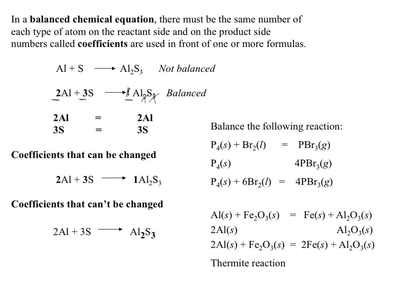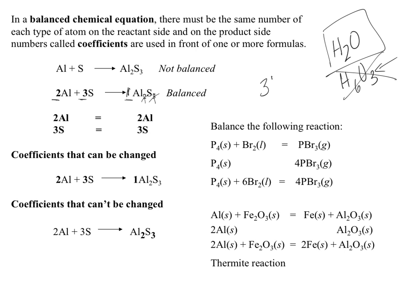For example, if I need three waters, I'm not going to change the subscripts. H₂O is a chemical formula that shows me the ratio of hydrogen to oxygen in a molecule of water — changing the subscripts gives you something that is not water. So if I need three H₂Os, I put the 3 in front. I cannot emphasize that enough: you can never change the chemical formulas. You can only, only put coefficients in front to balance.